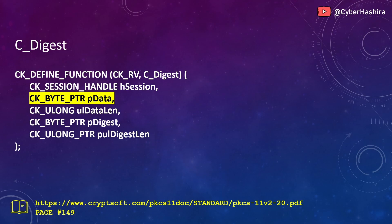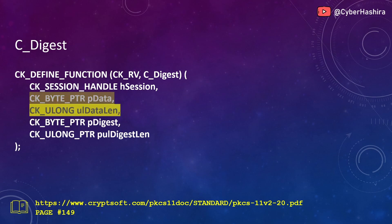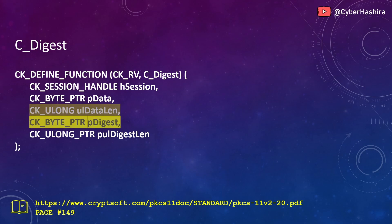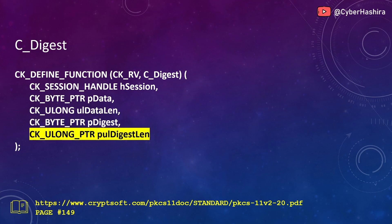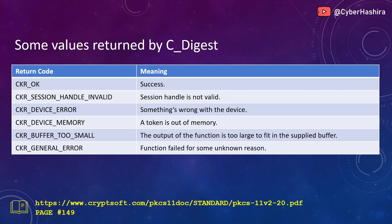The second argument is the location of the data from which the hash will be calculated. The third argument is the size of that data — this is an unsigned long value. The fourth argument is the location where the hash calculated from the data will be written. The fifth argument is the length of that hash.